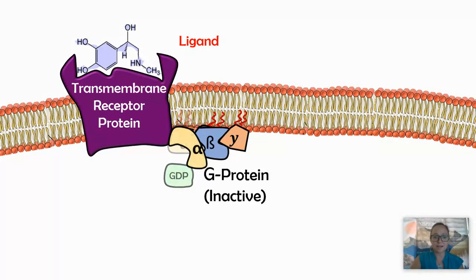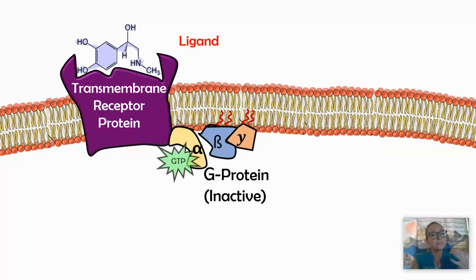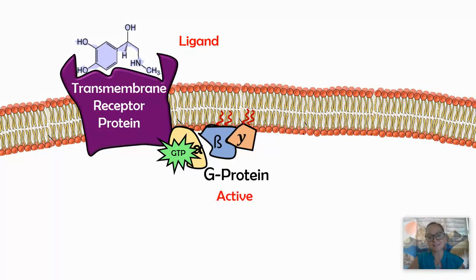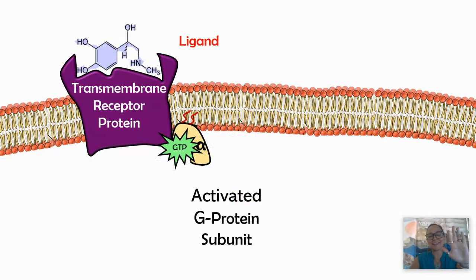When the G-protein becomes active, the alpha subunit breaks free, and the GDP is replaced with GTP. Now you have an active alpha subunit of the G-protein. For AP Bio, we're going to ignore the beta and gamma subunits and focus on the activated alpha subunit.